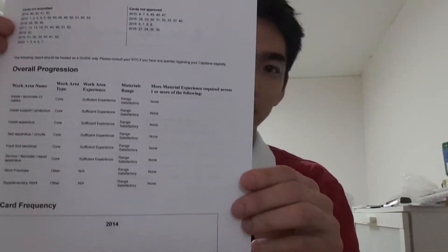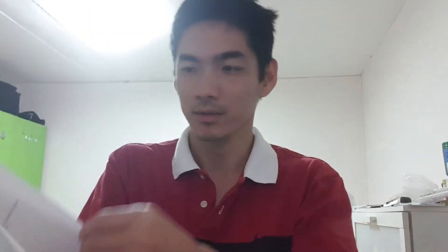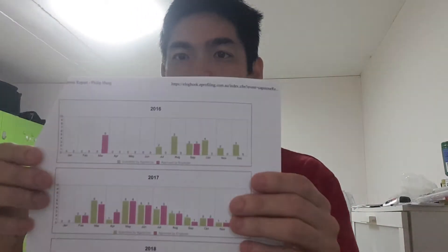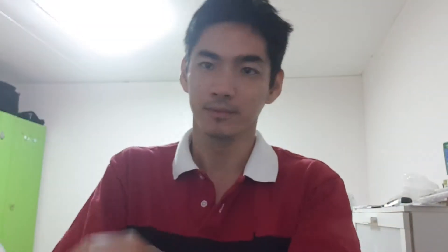I'll just show you one of the requirements to get yourself into Capstone. It is the Capstone Readiness Report, which I'll show you now. It's about four pages long. That's the first page, second — the Capstone Readiness Report has charts — and the next page, the last page.